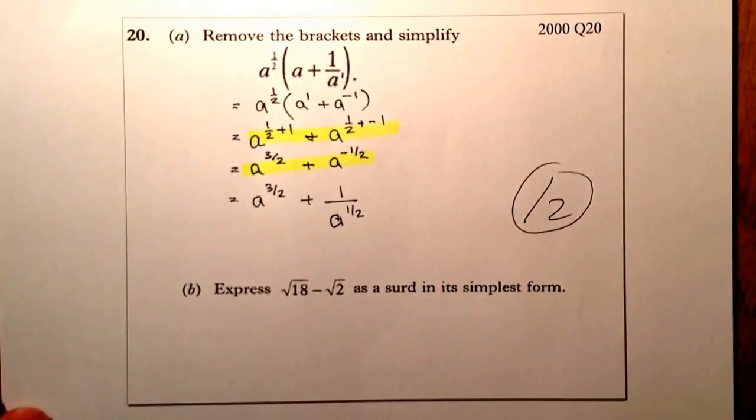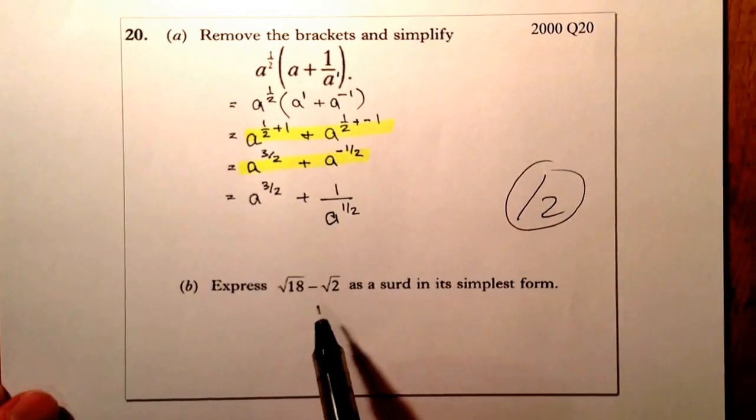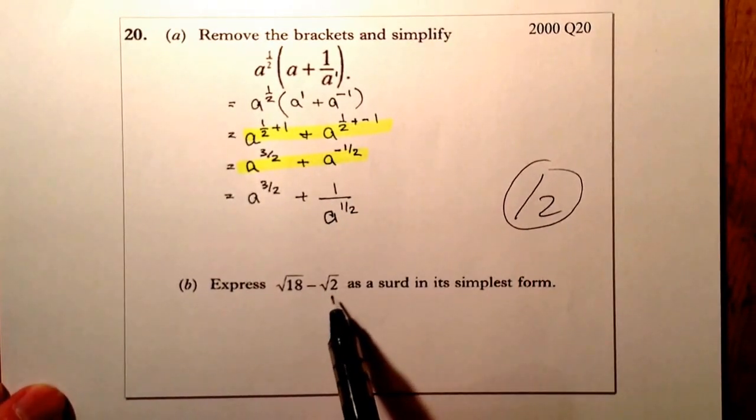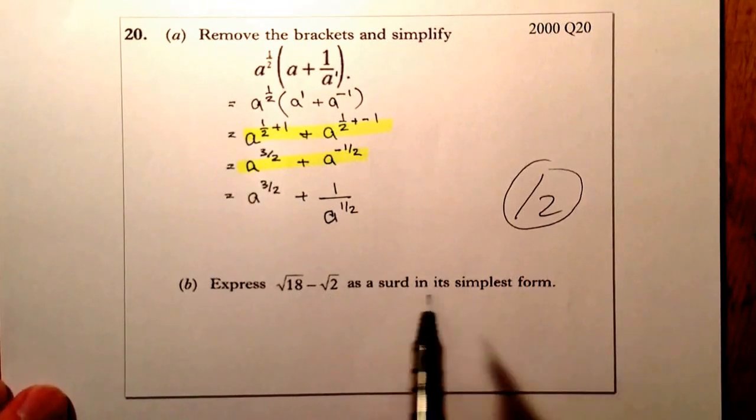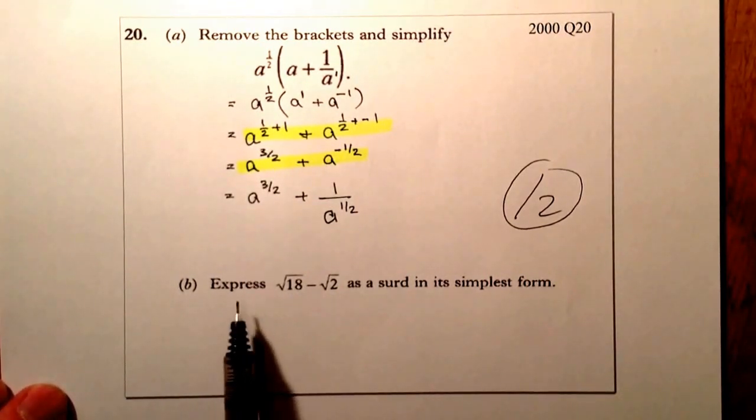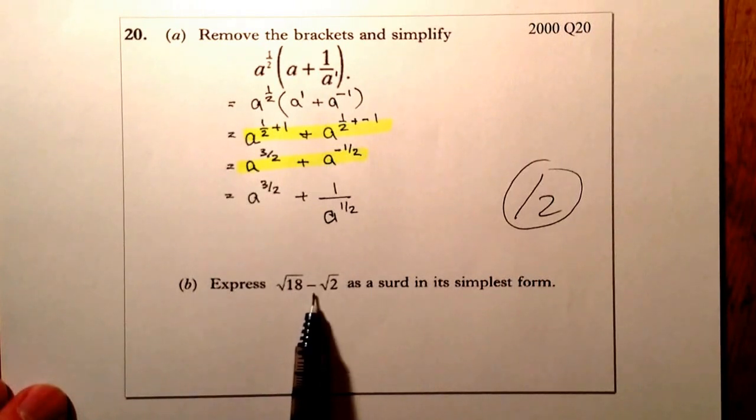If I look down the bottom here, I've got a surd question. So I'm going to express root 18 minus root 2 as a surd in its simplest form. When I get to a surd question where it's adding or subtracting,